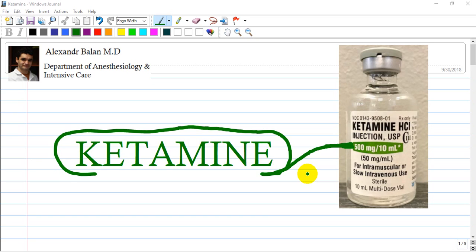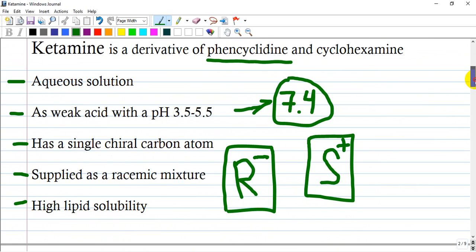Hi guys, let's discuss today an anesthetic drug called ketamine. Ketamine is a derivative of phencyclidine and cyclohexamine. It is presented as an aqueous solution, as a weak acid, and has a single chiral carbon. It is applied as a racemic mixture.